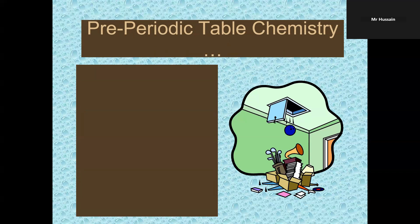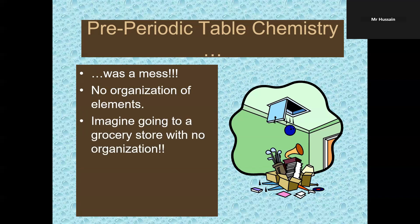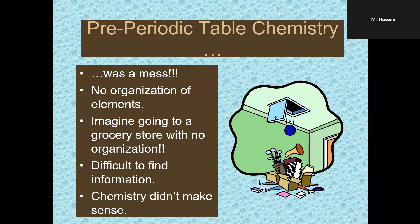Okay friends, let's talk about pre-periodic table chemistry. It was a mess without periodic table. Why? There was no organization of the elements. Imagine if you are going to a store and you don't know where the things have been placed. It's very difficult to find information, and without periodic table, chemistry doesn't make any sense.